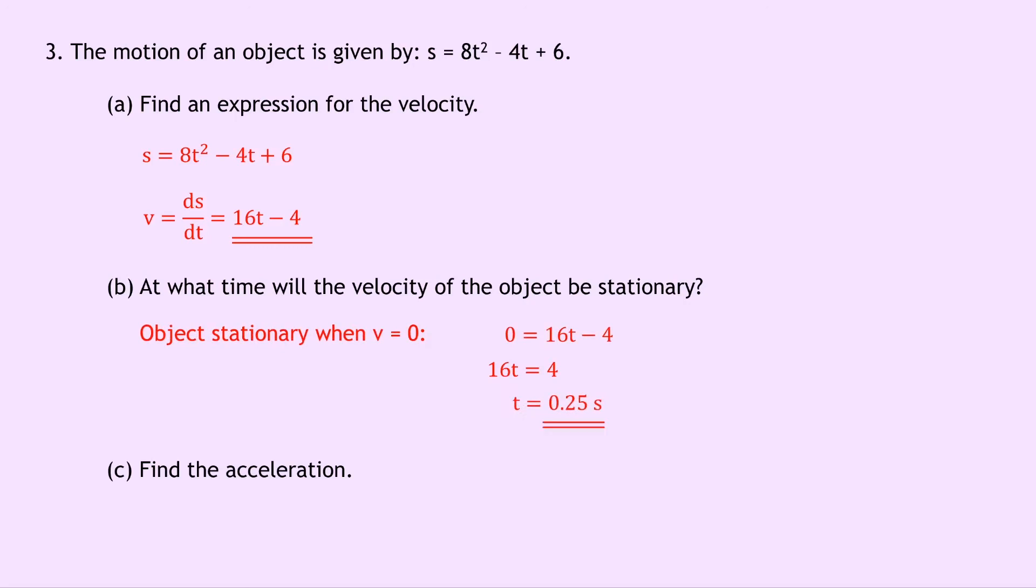Part c says to find the acceleration. Well remember in part a we worked out an expression for velocity so to find the acceleration we just need to differentiate the velocity with respect to time t. So we have a equals dv by dt which equals 16 meters per second squared because of the 16t here. So this means that the acceleration is a constant value of 16 meters per second squared.